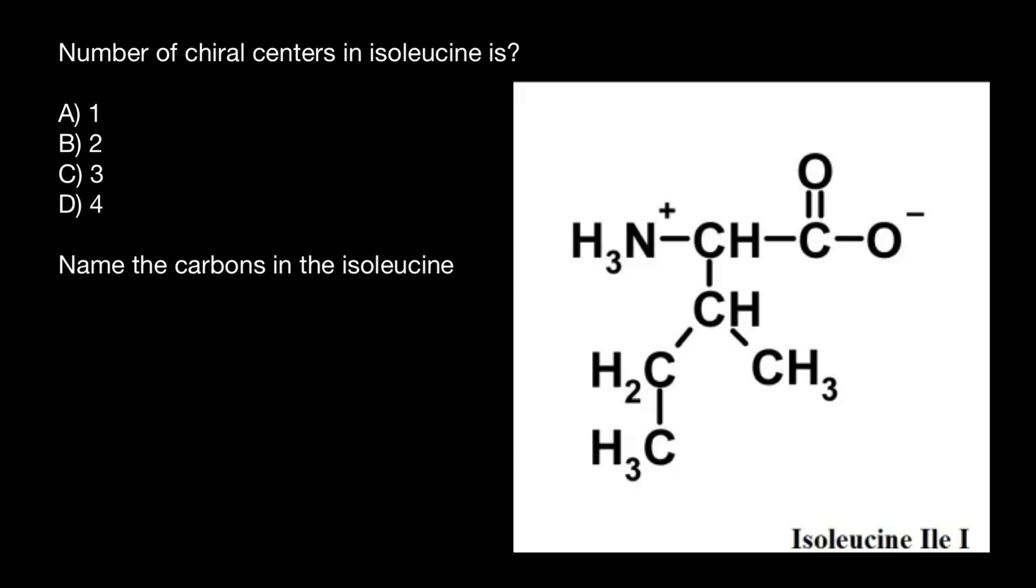So what is the definition of the chiral center? A chiral center would be such a carbon in an amino acid which is attached to four different groups.